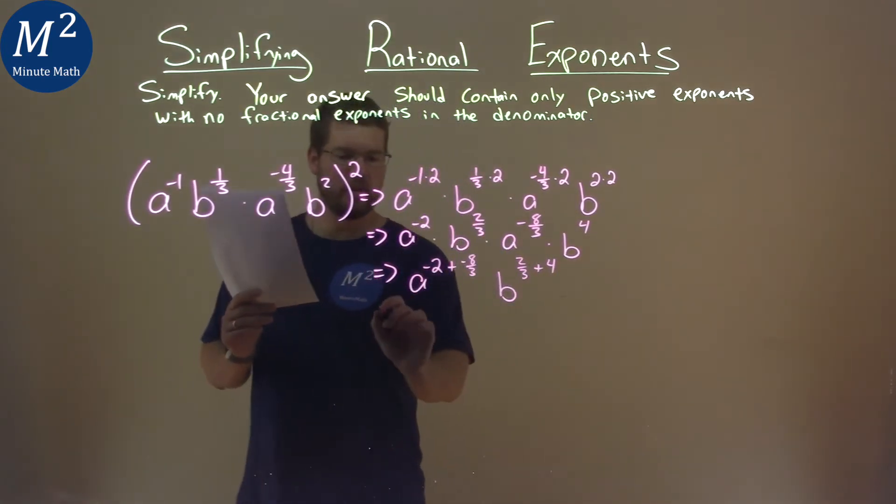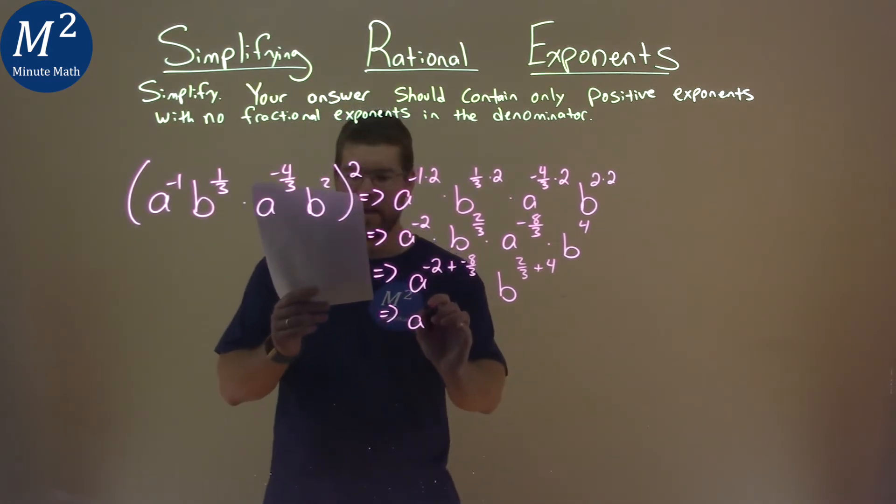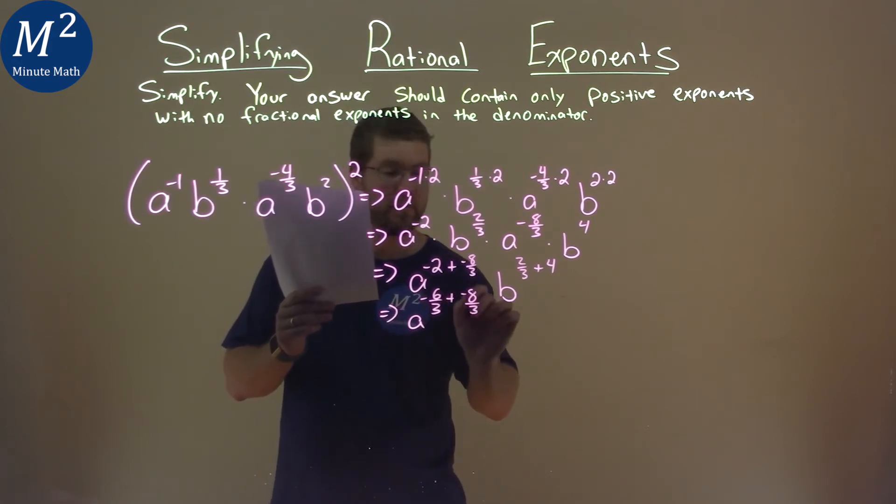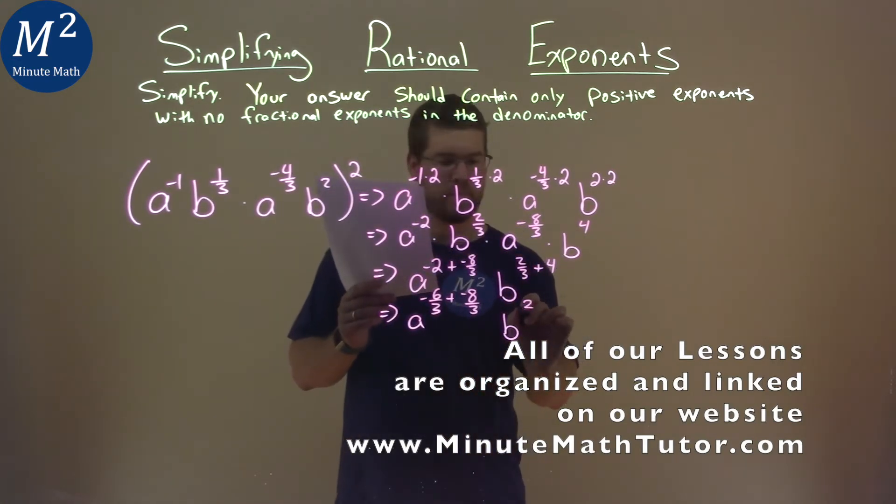Well, let's simplify this using our fractions. Finding a common denominator, we have a now to the negative 6/3 power plus a negative 8/3 power, and same thing with b, 2/3 plus 12/3.